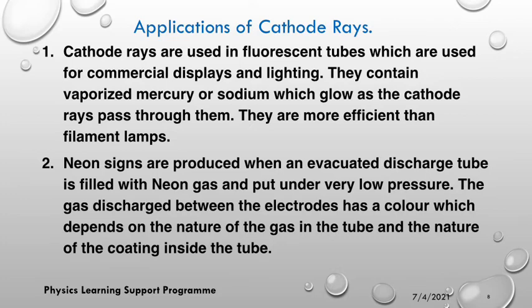And the nature of the coating inside the tube — that's very important information. The color of gas discharge between electrodes in neon signs is dependent on the nature of the gas in the tube and the nature of the coating inside the tube.